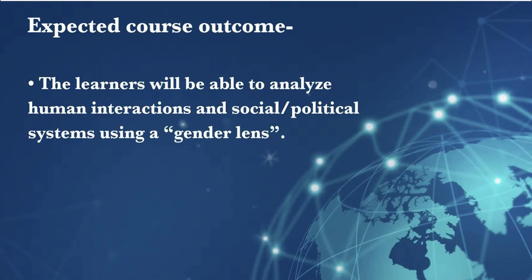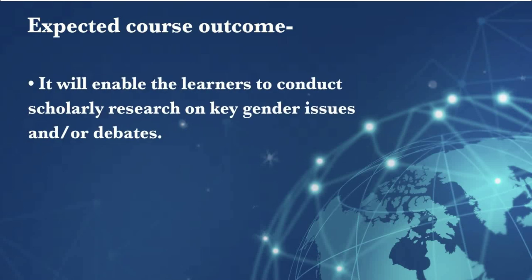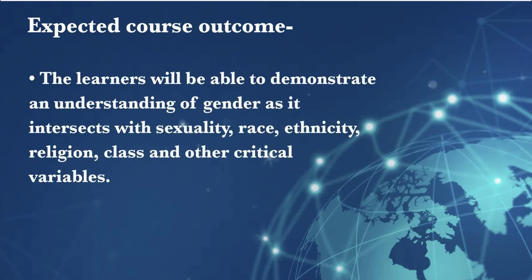The expected course outcomes are: the learners will be able to analyze human interactions and social or political systems using a gender lens. It will enable the learners to conduct scholarly research on key gender issues and other debates. Thirdly, the learners will be able to demonstrate an understanding of gender as it intersects with sexuality, race, ethnicity, religion, class, and other critical variables.